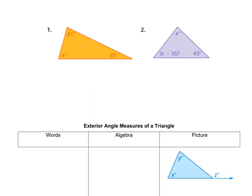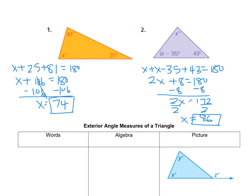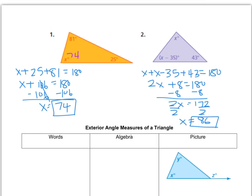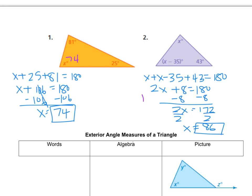I'd like you to try numbers 1 and 2. When you're ready, click play. So I found my measurements — this is a way to check yourself. Go back up to the picture and put 74, and when you add up your three angles, 74 plus 81 plus 25, you see if you get 180. You can do the same in number 2: plug in 86, and check that 86 plus 51 plus 43 equals 180.